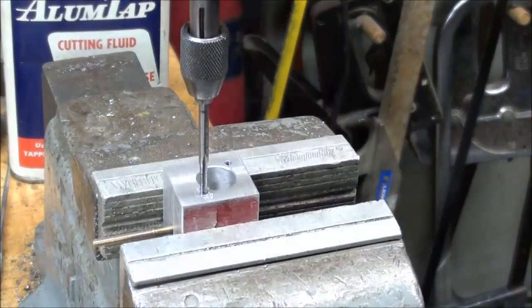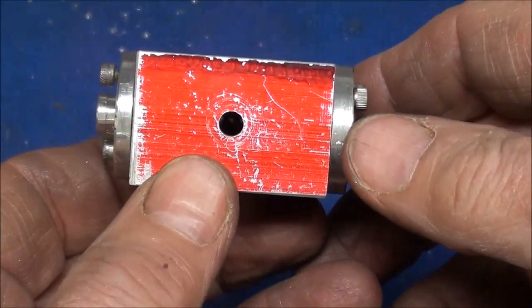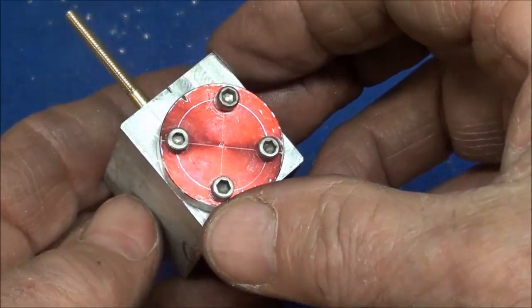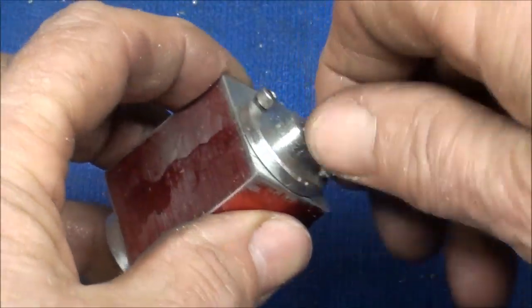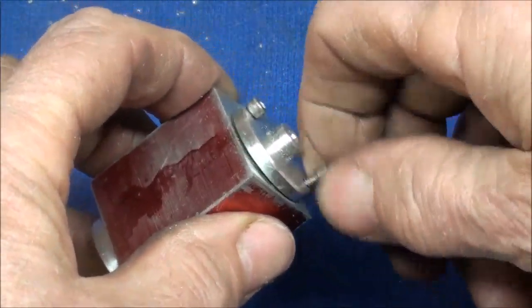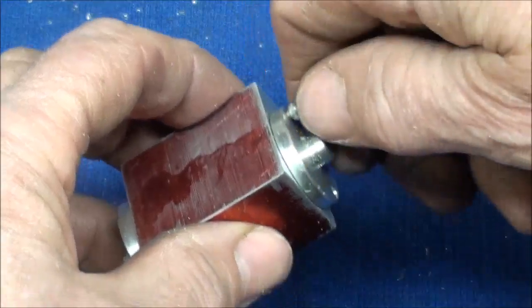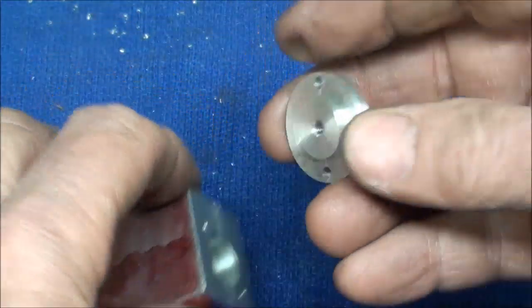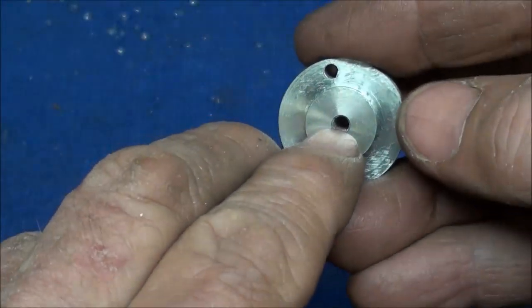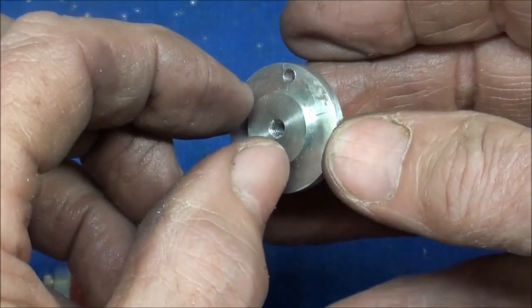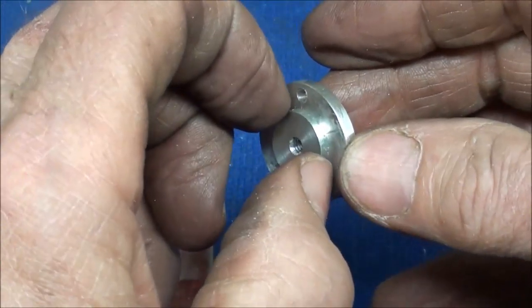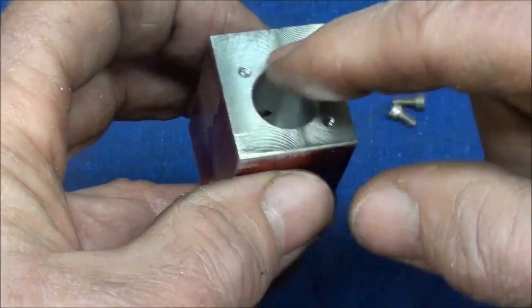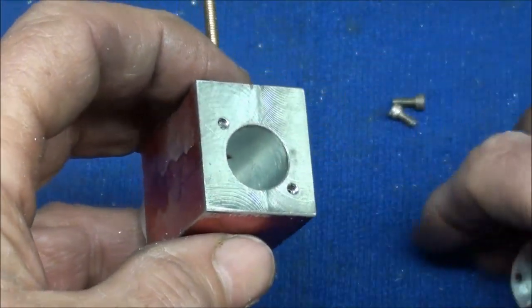This is what it looks like to this point. One thing I want to make real clear here - I'll take this bottom head off real quickly - that this center hole, that reamed 1/8 inch hole, must be concentric with this step here.